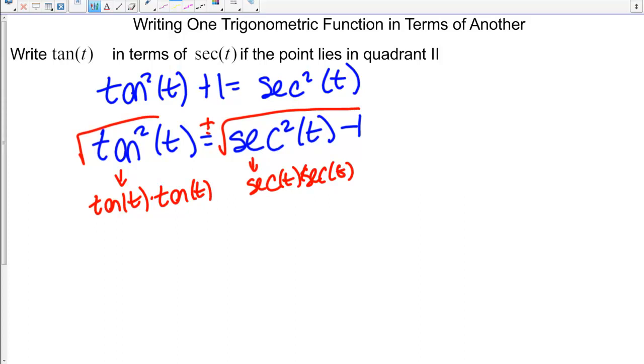When we take the square root we need plus or minus. We have tangent of T equals plus or minus square root of secant squared of T minus 1.